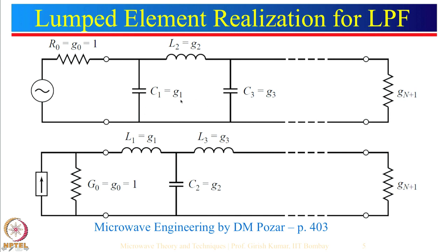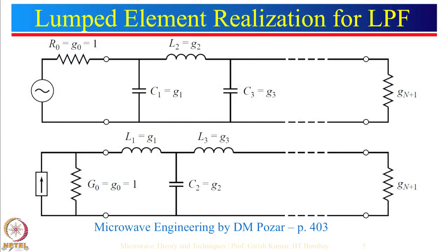The element values are denoted G1, G2, G3, and so on. We need to find the values of G1, G2, G3 to realize a low pass filter. There are several techniques proposed by different people to realize a low pass filter.